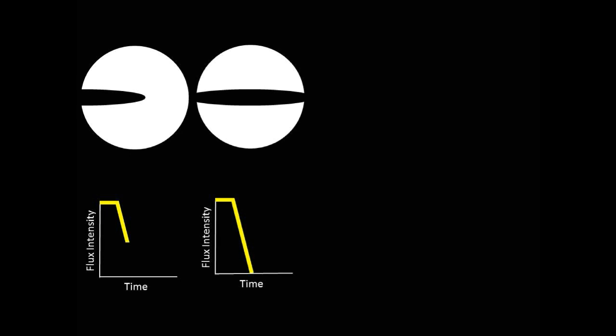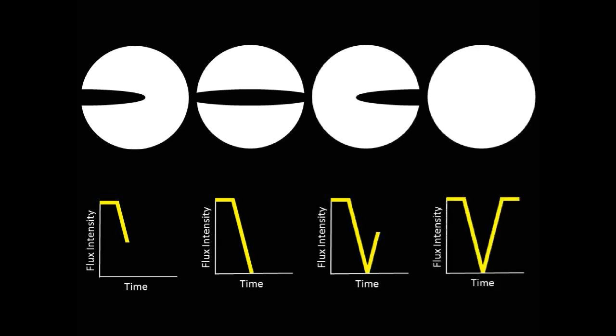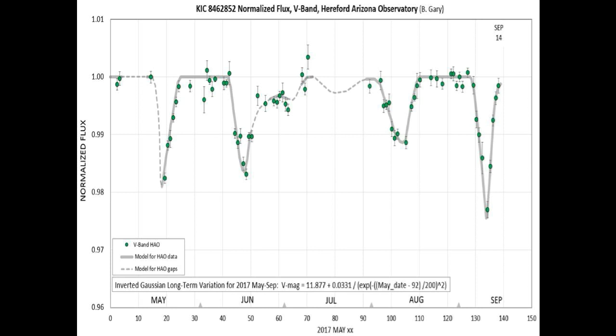This is what modelers are in the process of proving as the cause of the recent V-shape dimming event. We wanted to bring this natural explanation up as a viable alternative to an artificial explanation. You can access the paper in the link below. Enjoy your weekend and we will see you in our next video.